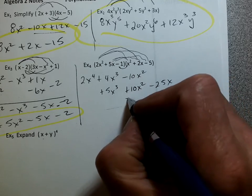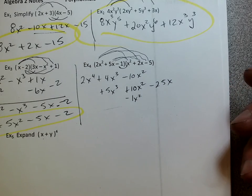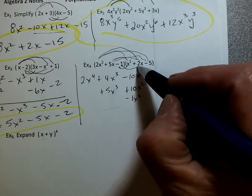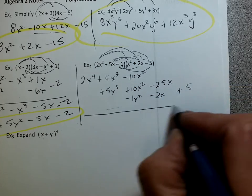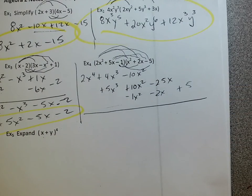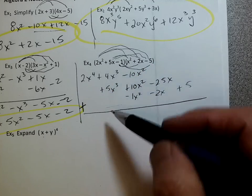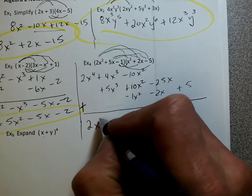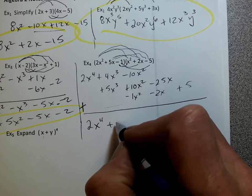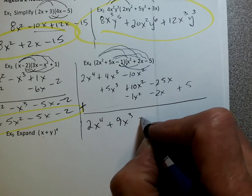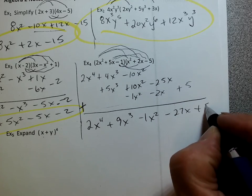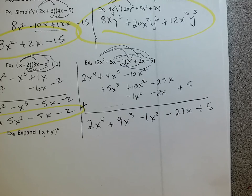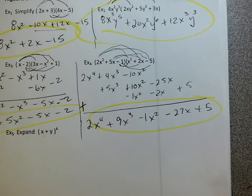It's the big foil. Minus 1x squared. I'll put that there. Line them up. Minus 2x. Positive 5. The big foil. So add all like terms. I'll have 2x to the fourth plus 9x cubed minus 1x squared minus 27x plus 5. I'm exhausted.